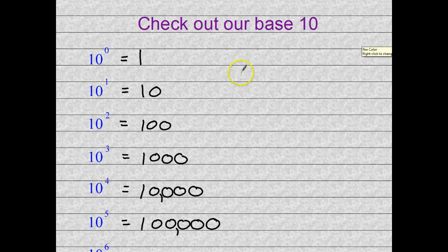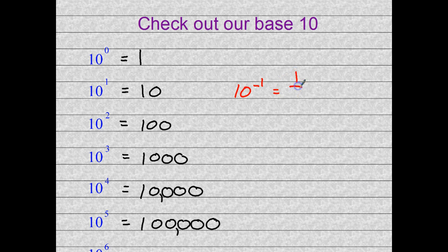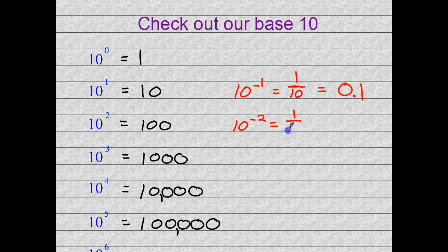A quick review of negative exponents: 10 to the negative first is 1 over 10, or one-tenth, which as a decimal is 0.1 — a 1 in the tenths position. 10 to the negative second is 1/100, which is a 1 in the hundredths position. This is the tenths place and this is the hundredths place, as a reminder.